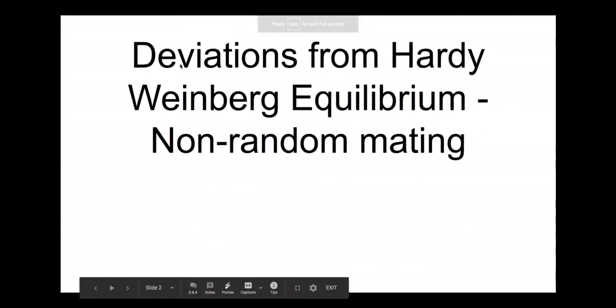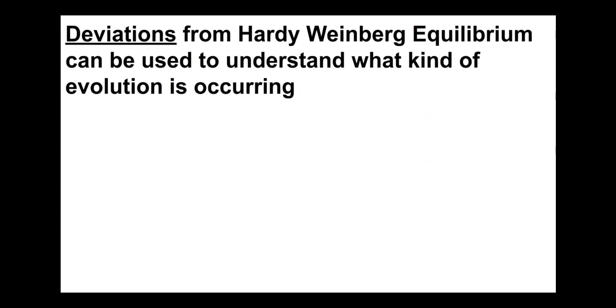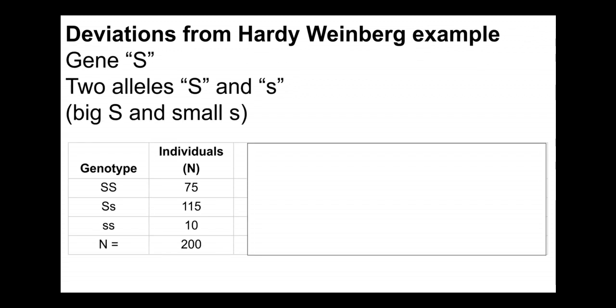In this video I'm going to finish up talking about Hardy-Weinberg equilibrium and deviations from Hardy-Weinberg equilibrium, and how that can occur due to non-random mating. Deviations from Hardy-Weinberg equilibrium can be used to understand what kind of evolution is happening — it could be natural selection, genetic drift, or some form of non-random mating that is causing allele frequencies to change over time.